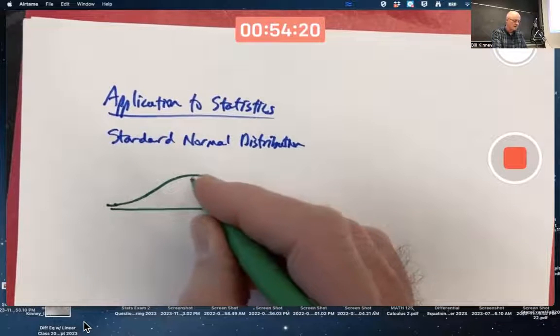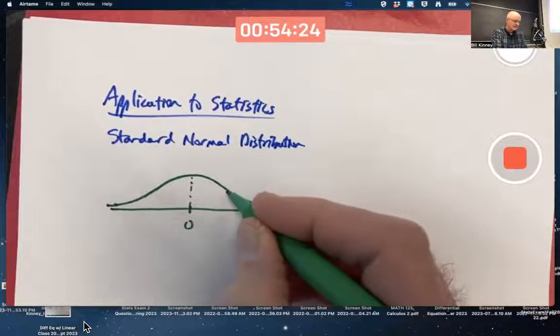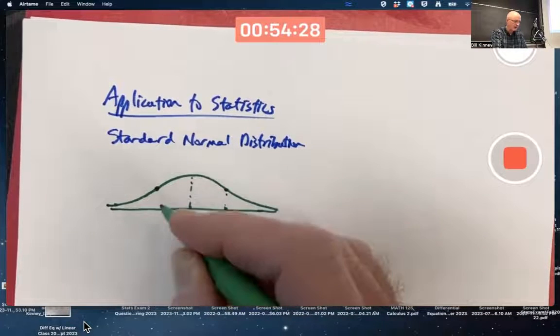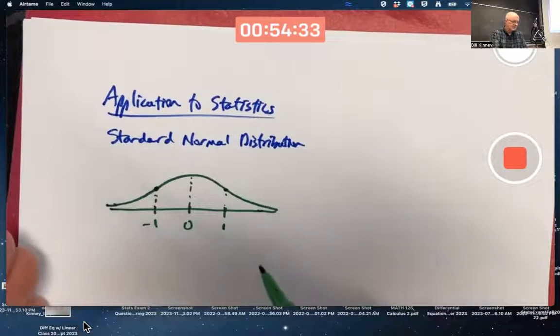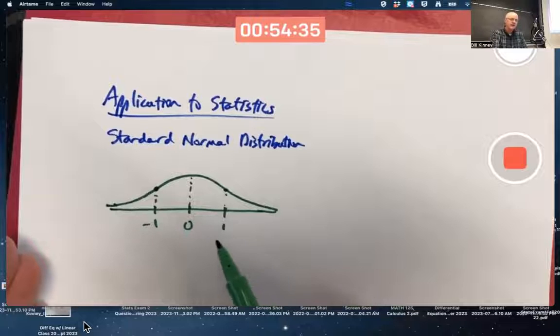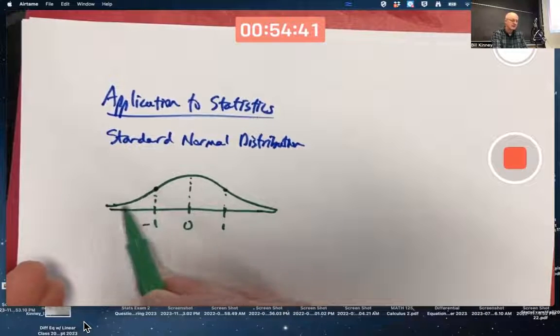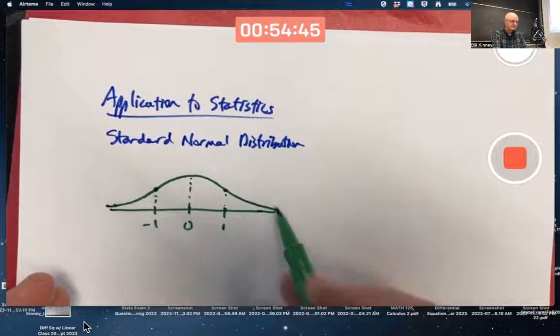Bell-shaped curve centered at 0. The inflection points on either side here turn out to be at 1 and negative 1. Remember inflection points? You can see the second derivative changes sign. The concavity changes here. It's concave up over here, concave down in the middle, concave up over here.